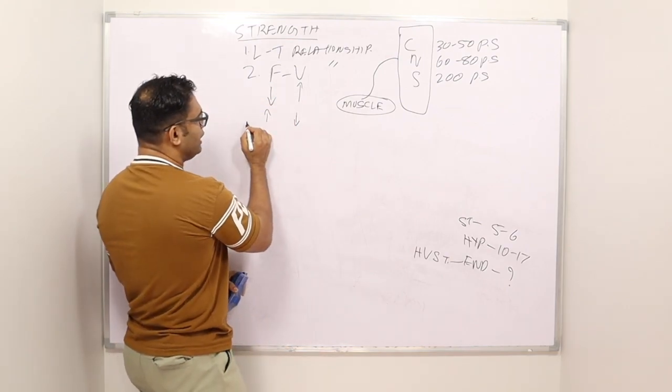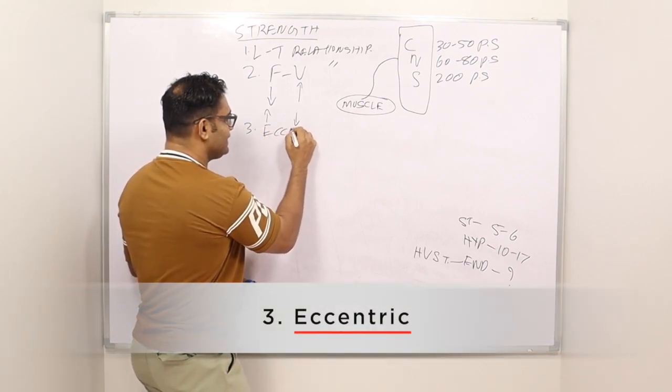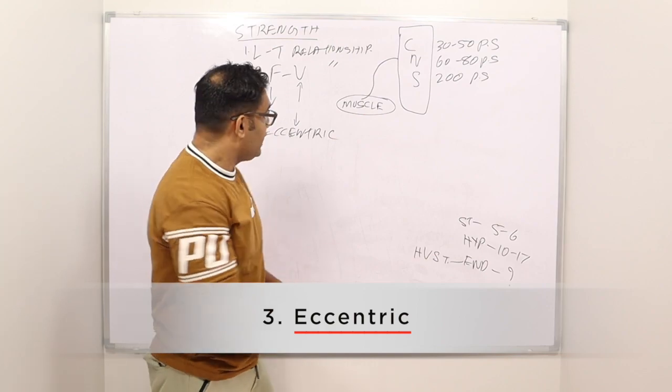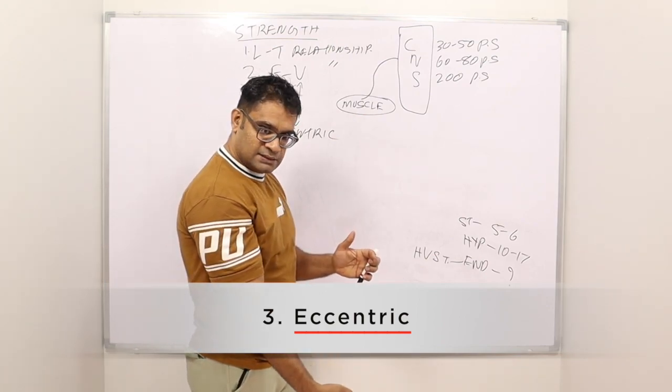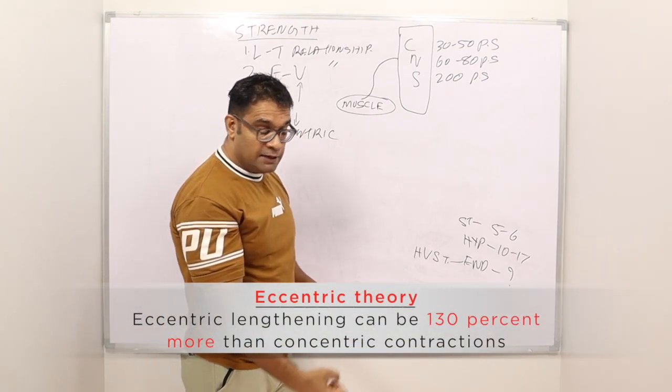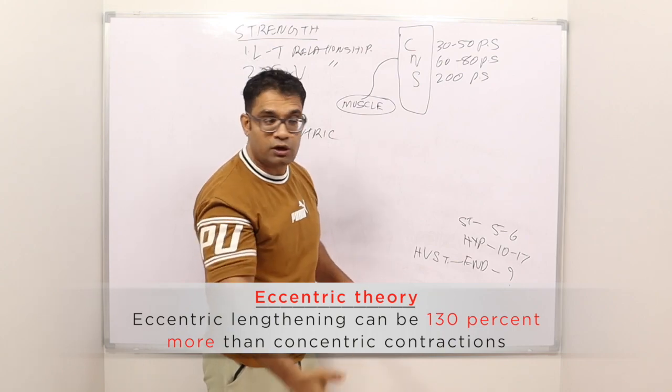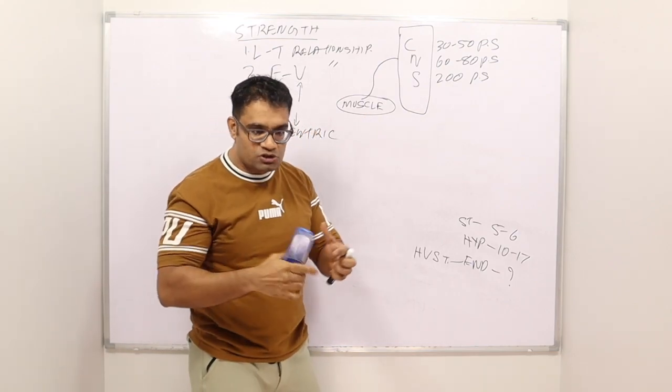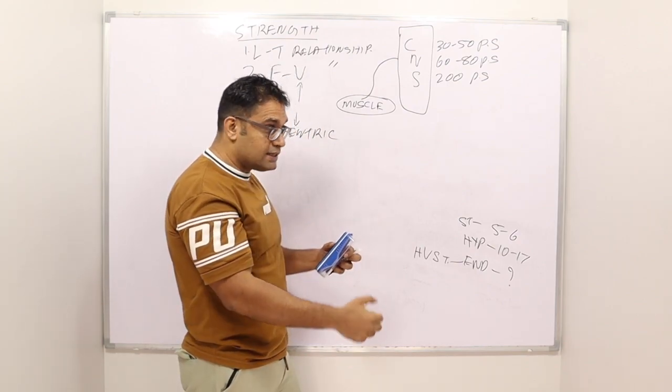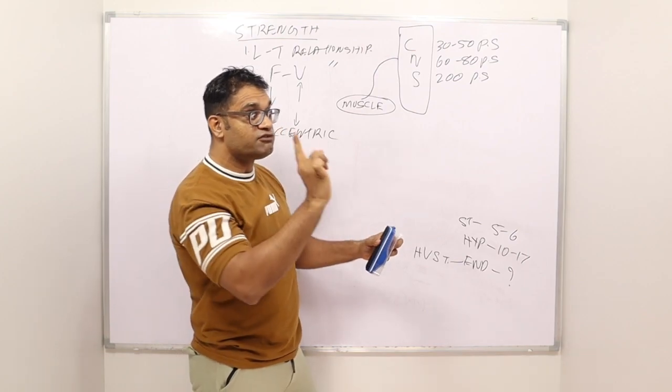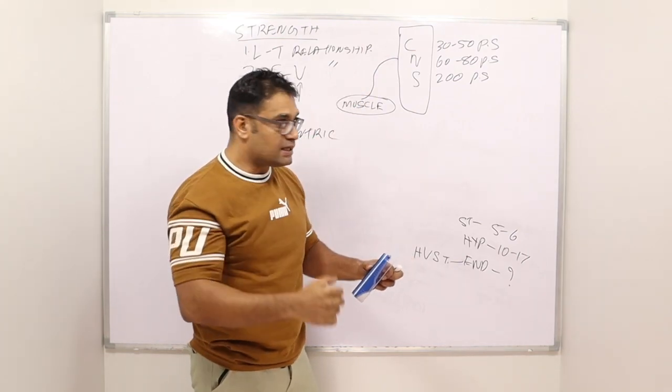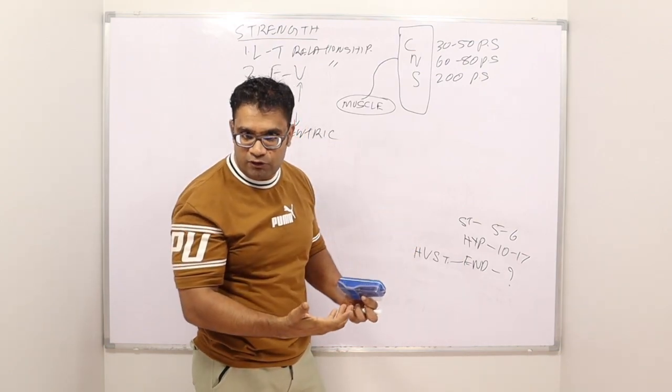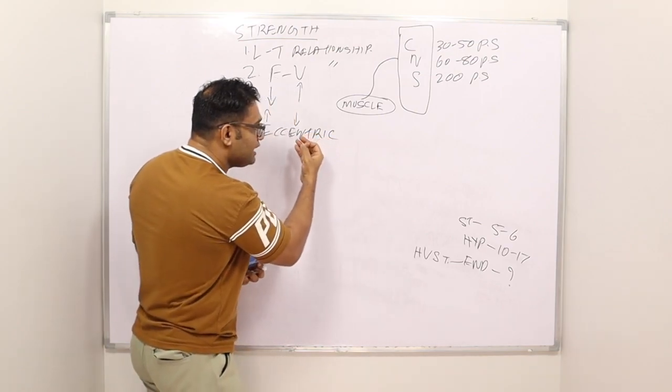Now this muscle, it doesn't have that much time to lock and pull. So you know what the body does? Normal strength training, the rate coding - the term is rate coding - the firing that happens, the signaling that happens from the central nervous system is around 30 to 50 times per second.